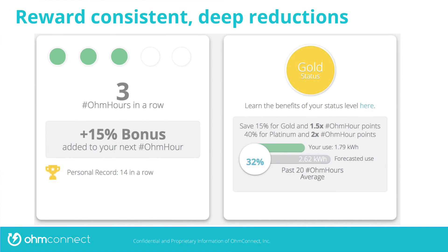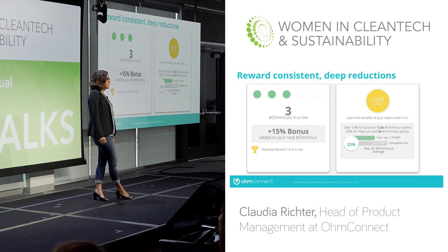Another way we're driving consistent energy savings is how we reward our customers. Last spring, we introduced the concept of streaks, which gives you an additional bonus for every consecutive Ohm hour in which you save. As long as you save consistently and don't opt out, you'll get a growing reward — and our users are incredibly proud of their streaks and do a lot to protect them. We also give people different status levels based on the depth of their reductions: the more you reduce on average, the higher your status level. Both status levels and streaks make it fun and competitive for users.